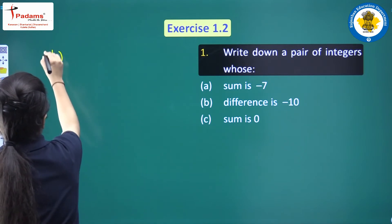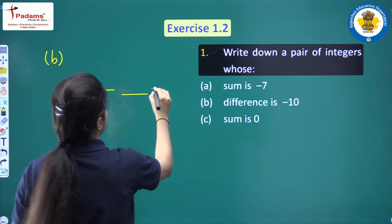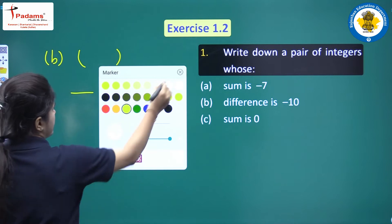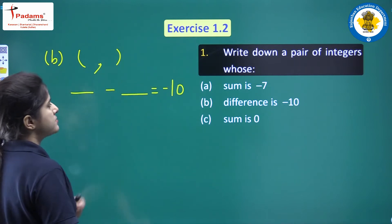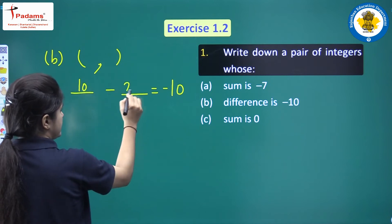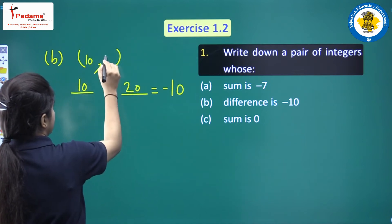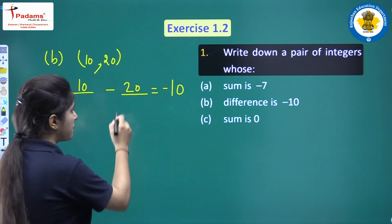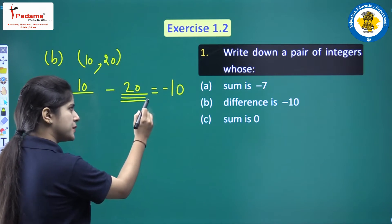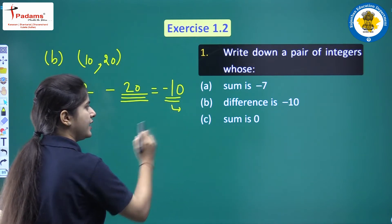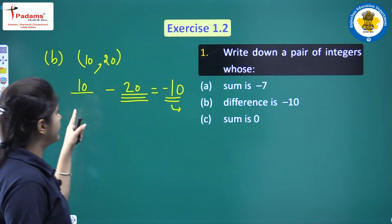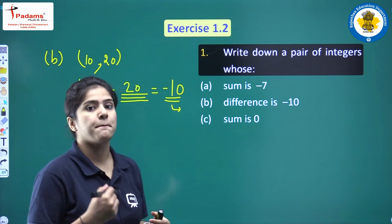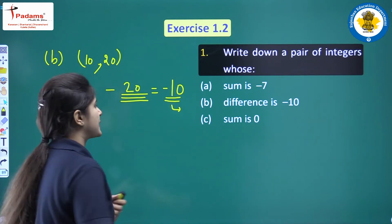Now for part b: write a pair of integers whose difference is minus ten. If I take 10 and 20, then 10 minus 20 equals minus ten — because the larger number is 20, and the sign of the answer should be the sign of the larger number. So 10 and 20 is a pair of integers whose difference is minus ten.